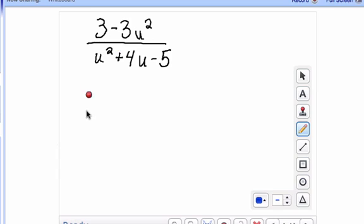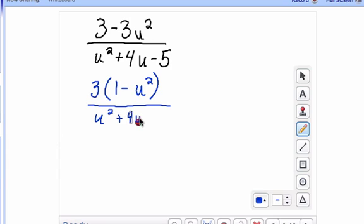So I see I can divide both of these by 3, so I rewrite this fraction as 3 times the quantity 1 minus u squared. If you multiply these back together, you get this. And then the denominator, we can't common factor anything out of that one, so it's just going to stay u squared plus 4u minus 5.